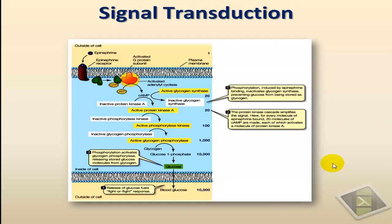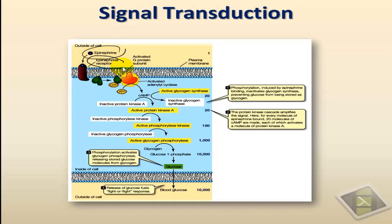Signal transduction involves a process by which an external signal is converted to a different type of signal inside the cell that is amplified thousands and thousands of times. Taking the example of epinephrine as the signal, which acts on an adrenergic receptor on the membrane, which is a G-protein coupled receptor resulting in the formation of the second messenger cyclic AMP.